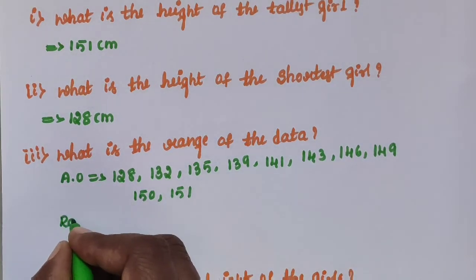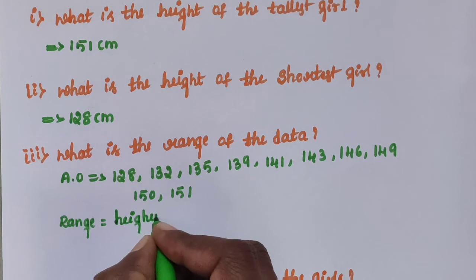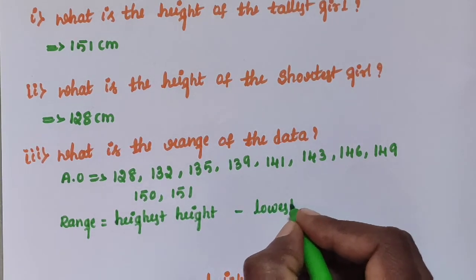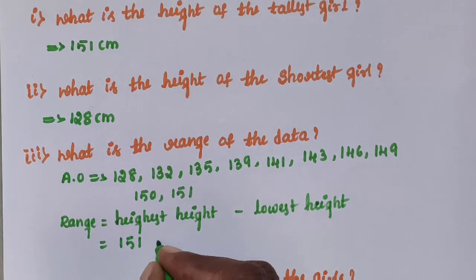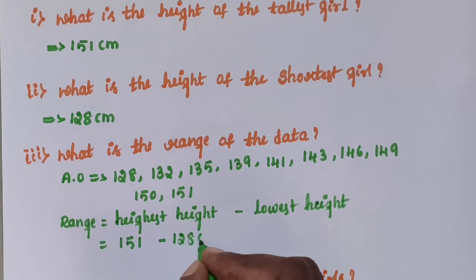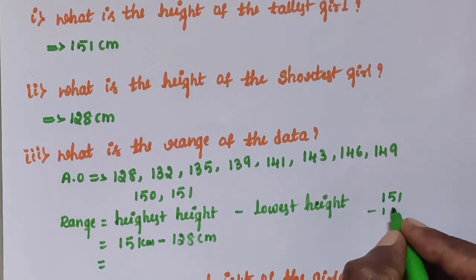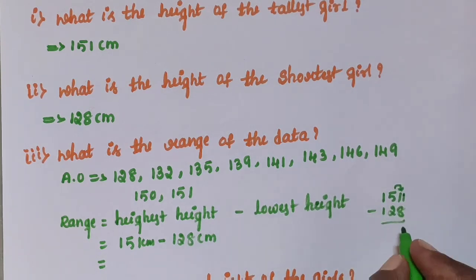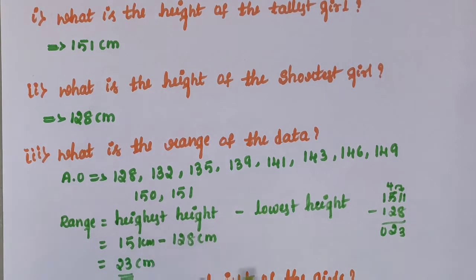Find the range. Range is equal to highest height minus lowest height. Highest height is 151 cm, lowest height is 128 cm. So 151 minus 128: 1 is smaller than 8, take carry, 11 minus 8 is 3, remaining 4 minus 2 is 2, 1 minus 1 is 0. The answer is 23 cm is the range.